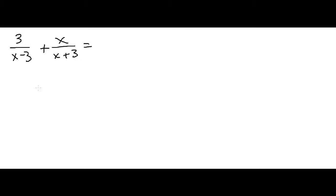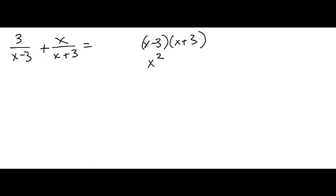I know that doesn't fully make sense the way I said it, but essentially you have to find the least common multiple, and in this case that is going to be x minus 3 times x plus 3.